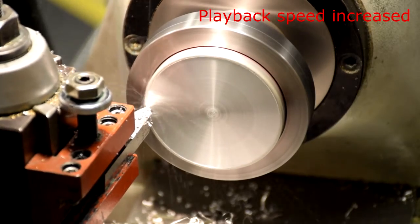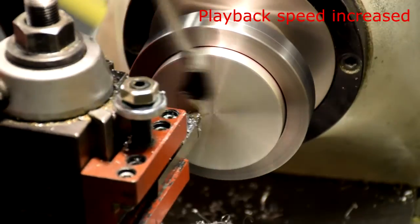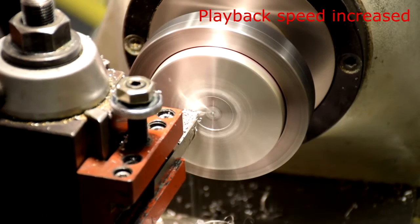Once the part is 3 eighths of an inch thick, cut the channel and the chamfers on this side of the part using the same process as before.